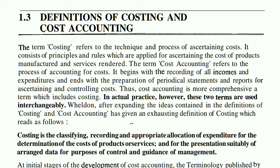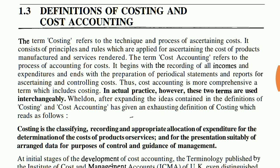The term cost accounting refers to the process of accounting for cost. Cost accounting means that the cost you have ascertained is then accounted for. When there is a product and you find the amount of cost — the raw materials, the different prices, the technique, the process used — all of that process is called costing.